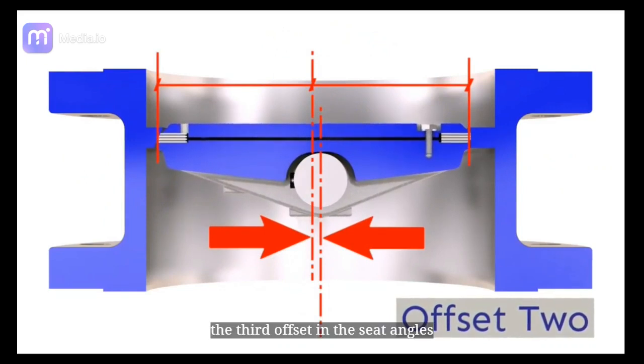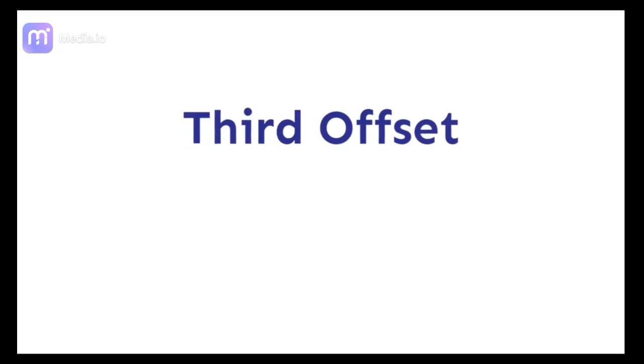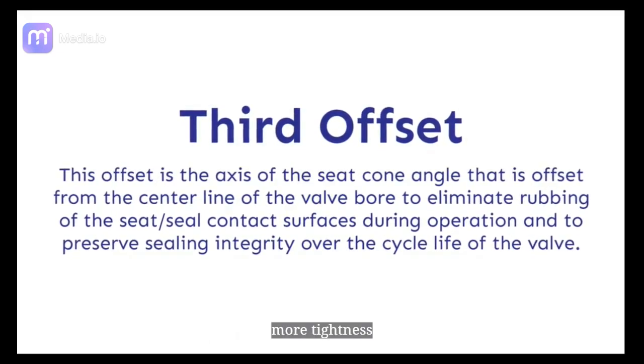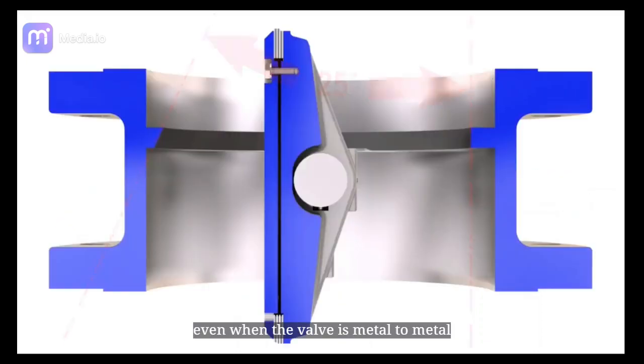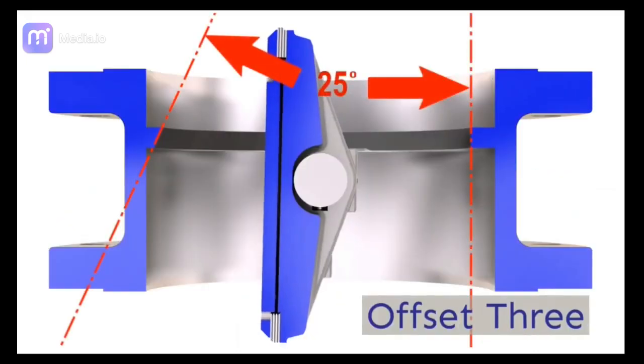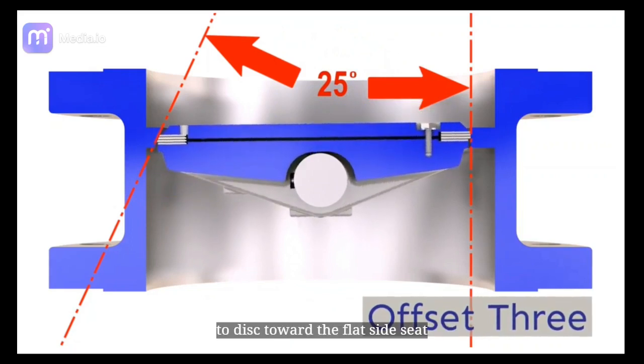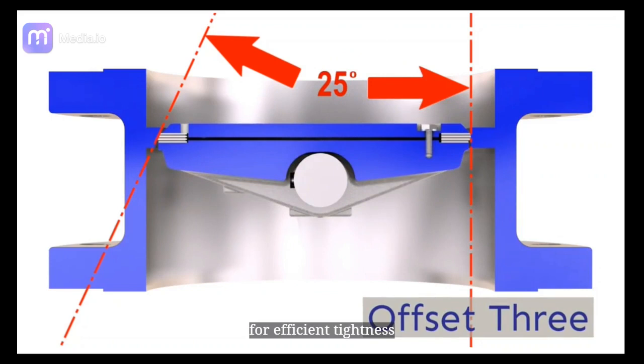The third offset in the seat angles, machined like a unique conical angle, helps for more tightness even when the valve is metal to metal. One side angle seat imposes enough force to disc toward the flat side seat for efficient tightness.